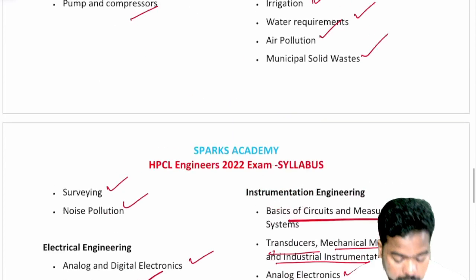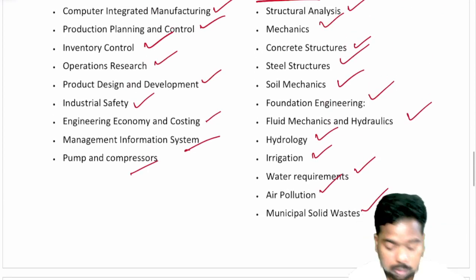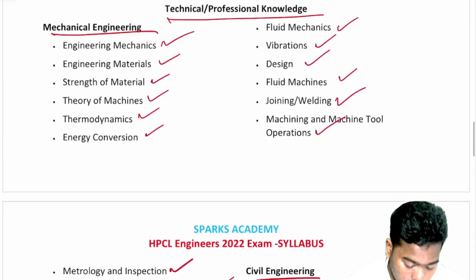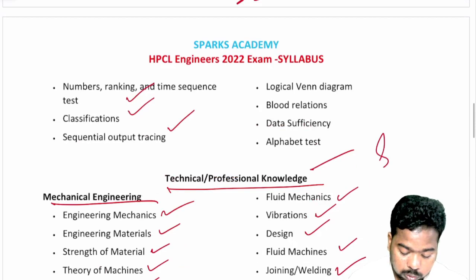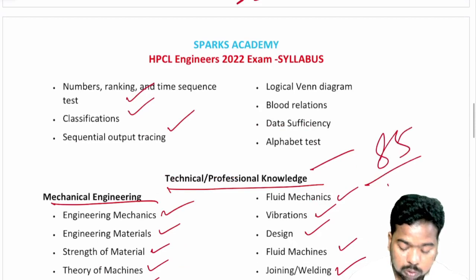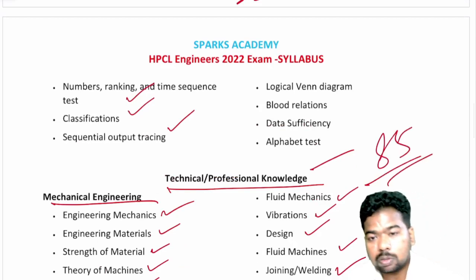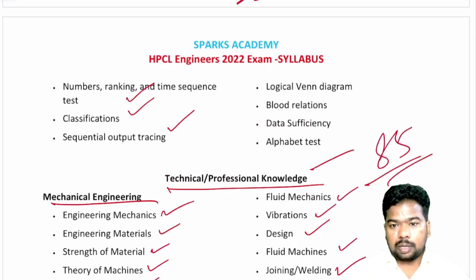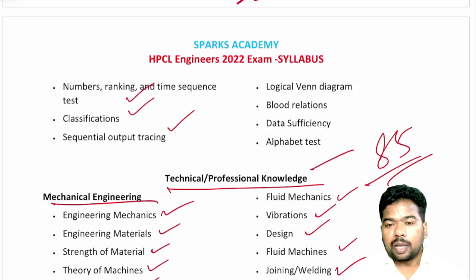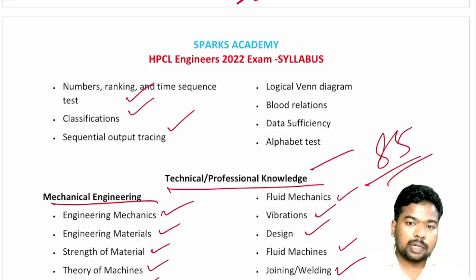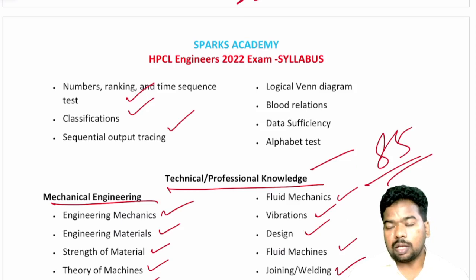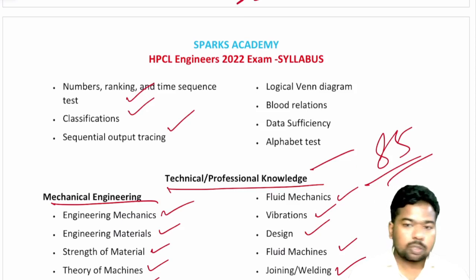You can apply for any engineering subject. The technical and professional knowledge section has 85 questions worth 85 marks. There are negative marks, so be careful when answering.